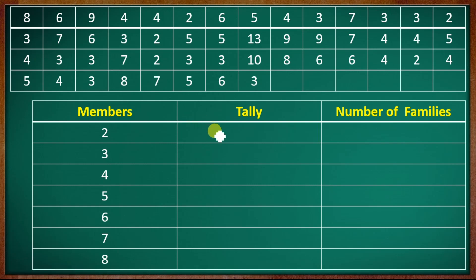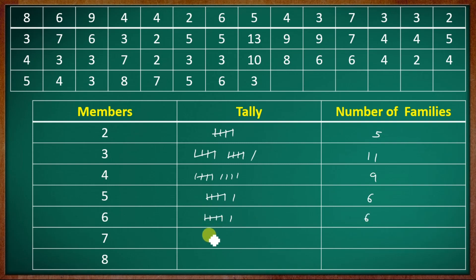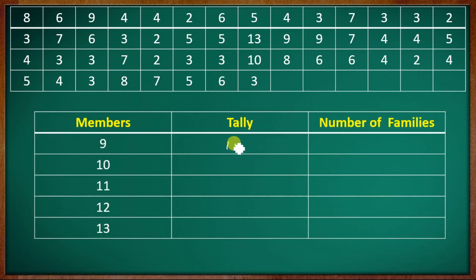Building the frequency table: households with 2 members — tally count gives 5. Households with 3 members — count is 4, giving 4. Households with 4 members — count is also 4. Households with 5 members — count is 5, giving 6. Households with 6 members — that is 6. Households with 7 members — count is 5. Households with 8 members — count is 3. Households with 9 members — count is 3. Households with 10 members — count is 1. Households with 11 members — count is 0. Households with 12 members — count is 0. Households with 13 members — count is 1.